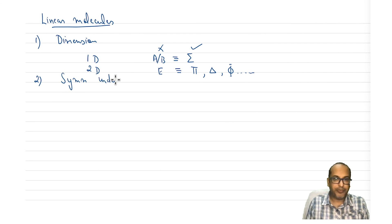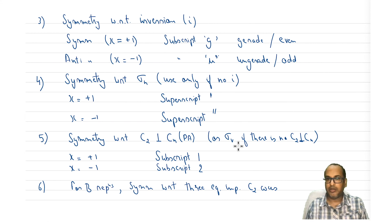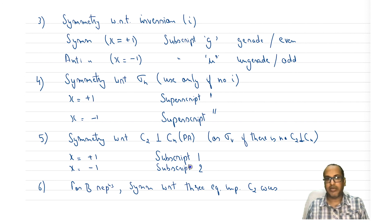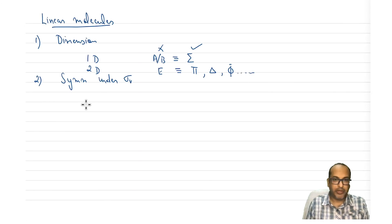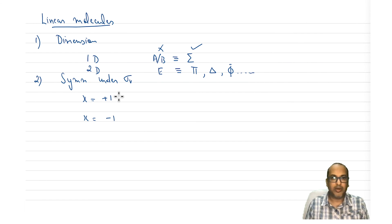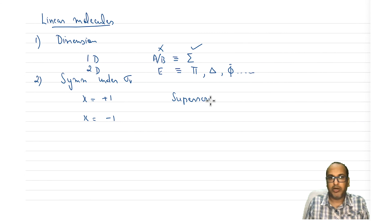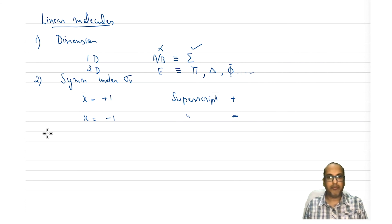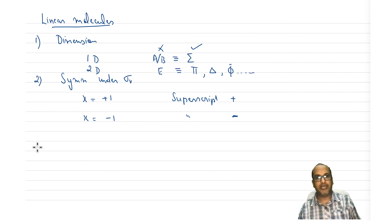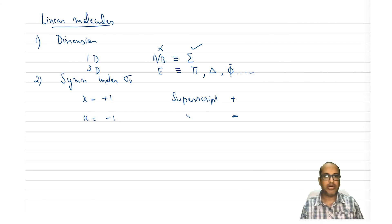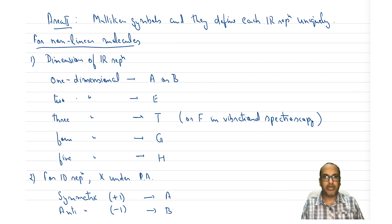For linear molecules, symmetry under sigma_V: if the character is plus one, it takes superscript plus; if the character is minus one, it takes superscript minus — that is the only difference from nonlinear molecules. The rest of the rules remain the same. This defines the complete character table. Now let us look at the example of C3V that we have been discussing.